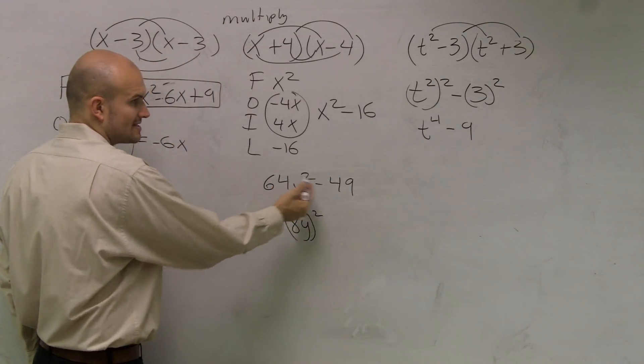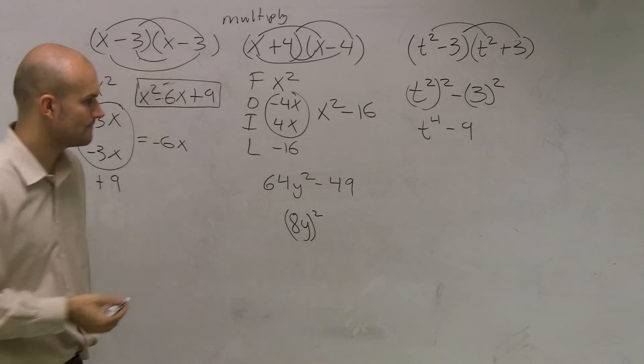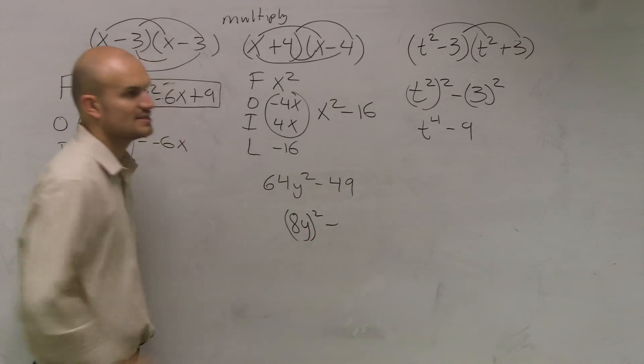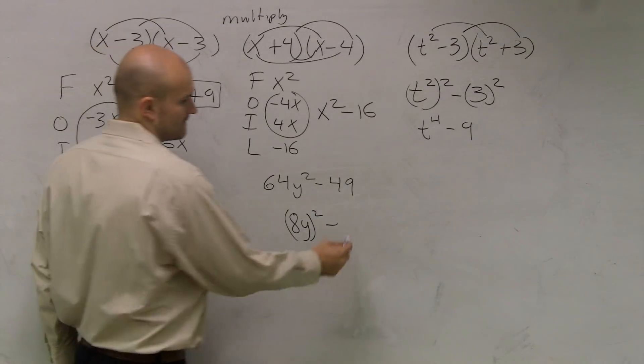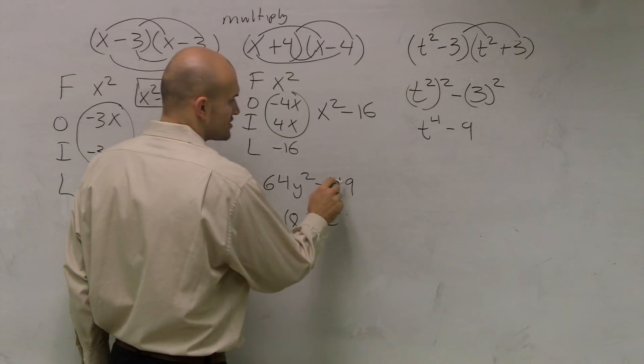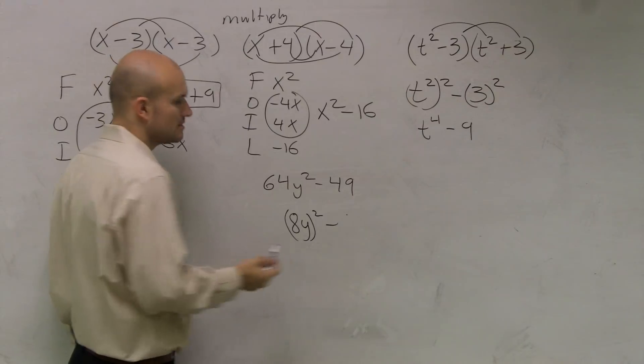It doesn't matter. I mean, it's eight y times eight y, right? Eight y times eight y would give you 64 y squared. And then, can I rewrite 49 as a squared number? Yeah. Which will be what? But what squared gives me 49? Seven squared.